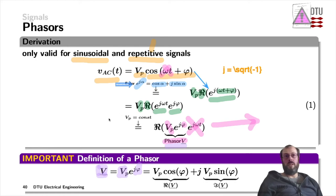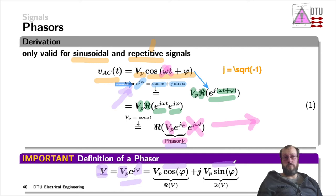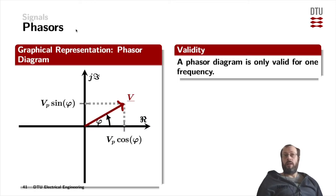As long as we know we are working at a specific frequency, all the information is coded in those two parameters: the amplitude and the phase. Applying Euler's equation, we can rewrite the phasor as a summation of a cosine plus j times a sine, both with argument phi and amplitude v_p. The real part of the phasor is the cosine term, and the imaginary part is the sine term, left behind the j.